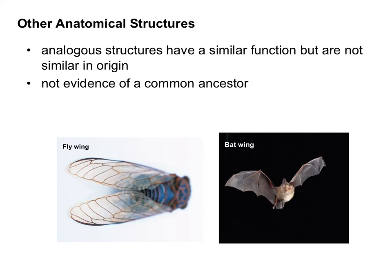We also have analogous structures, which are tricky because they seem like they would be related, but they're not. An analogy is a relationship where something is similar. A fly wing and a bat wing have a similar job or function, but that doesn't mean they have a common ancestor — a fly is an insect and a bat is a mammal, and they did not evolve from a common ancestor. These are known as analogous structures.